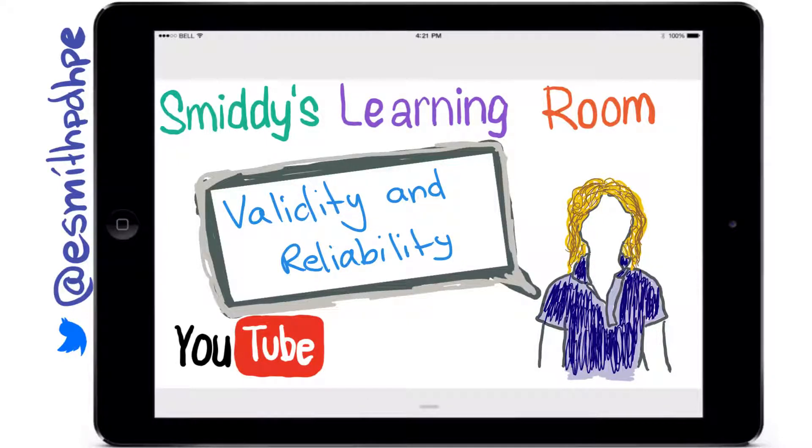Welcome back to Smitty's Learning Room. Today we're going to continue looking at Core 2 and the focus question, how does the acquisition of skill affect performance? And we're going to have a look at validity and reliability.